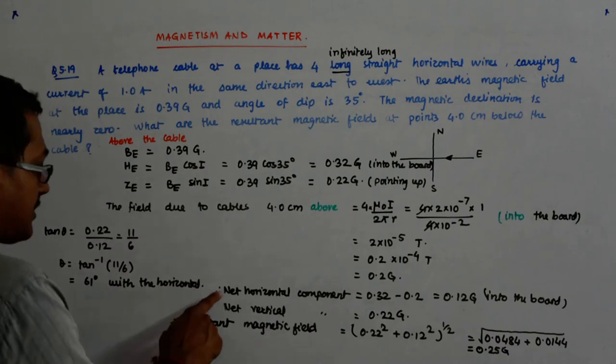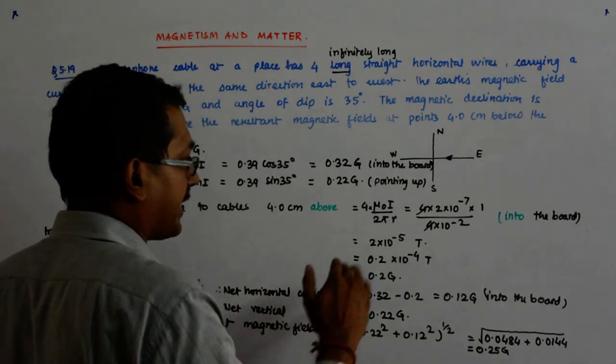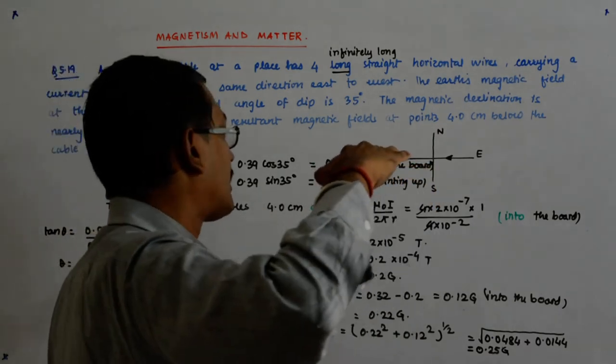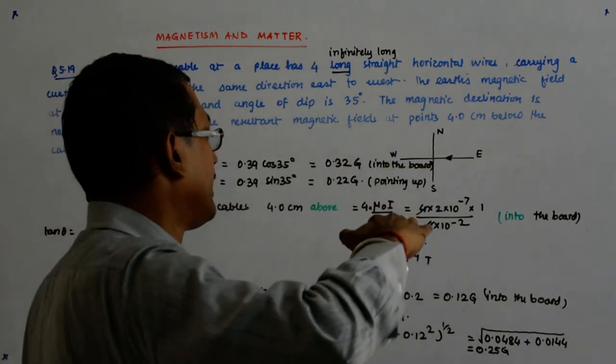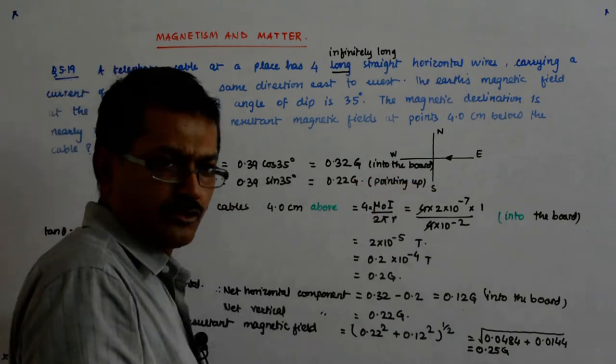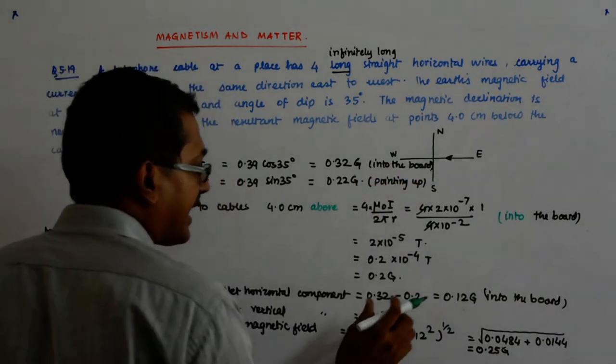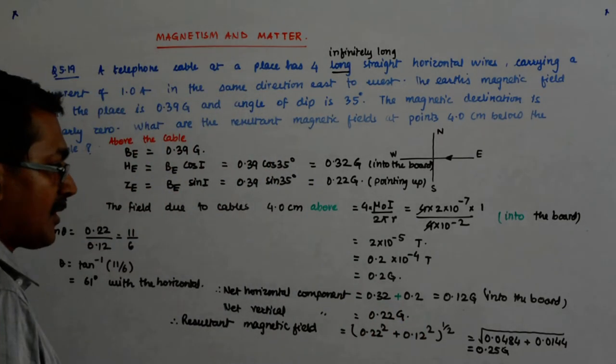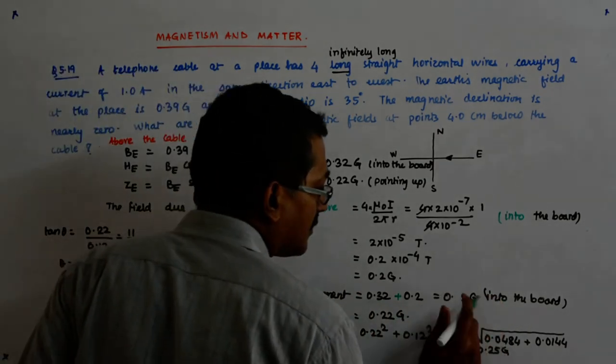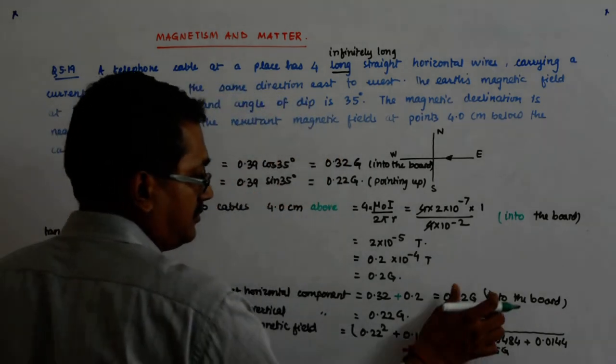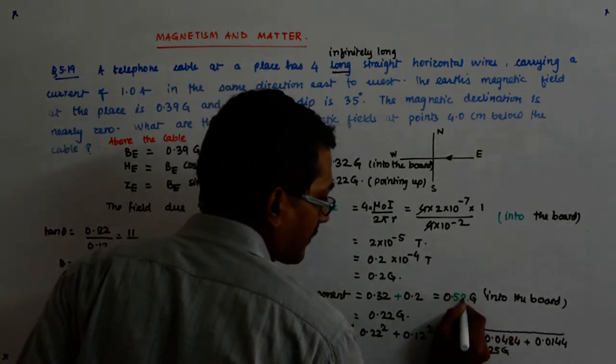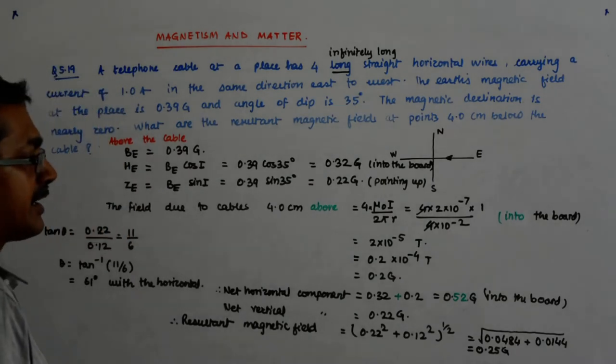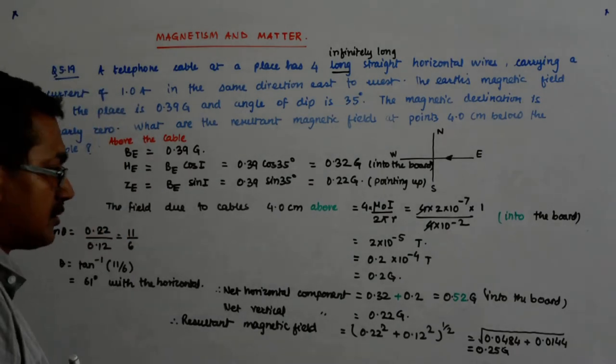Now, what happens? Therefore, net horizontal component, since my horizontal component here is also into the board and here this 0.2 G is also into the board, they will get added up. And hence, become 0.52 GAUS. That is, into the board.